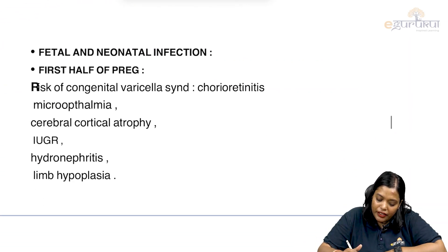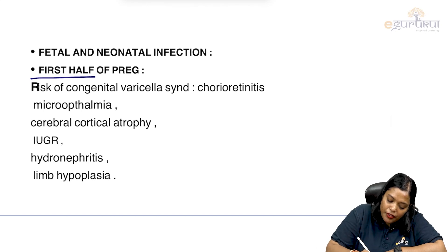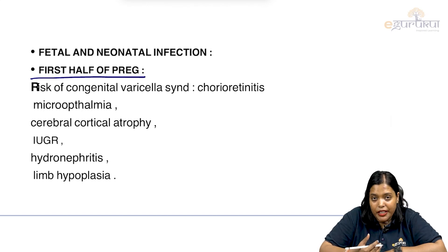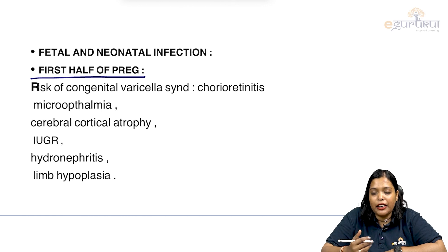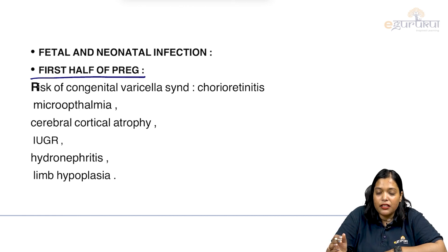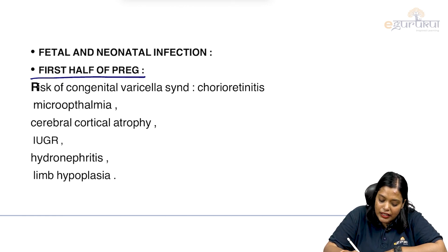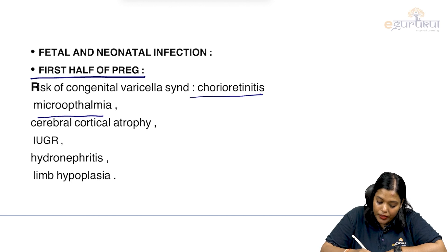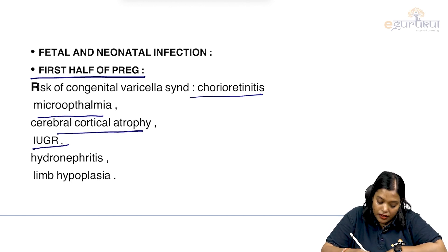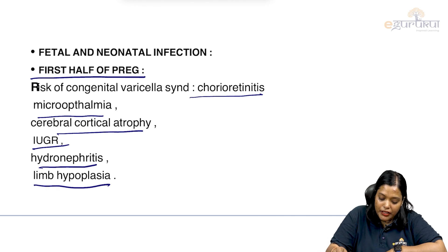Regarding fetal and neonatal infection: in the first half of pregnancy, if we acquire chickenpox and are not immune, there is a risk of congenital varicella syndrome. The features include chorio-retinitis, microphthalmia, cerebral cortical atrophy, IUGR, hydronephritis, and limb hypoplasia.